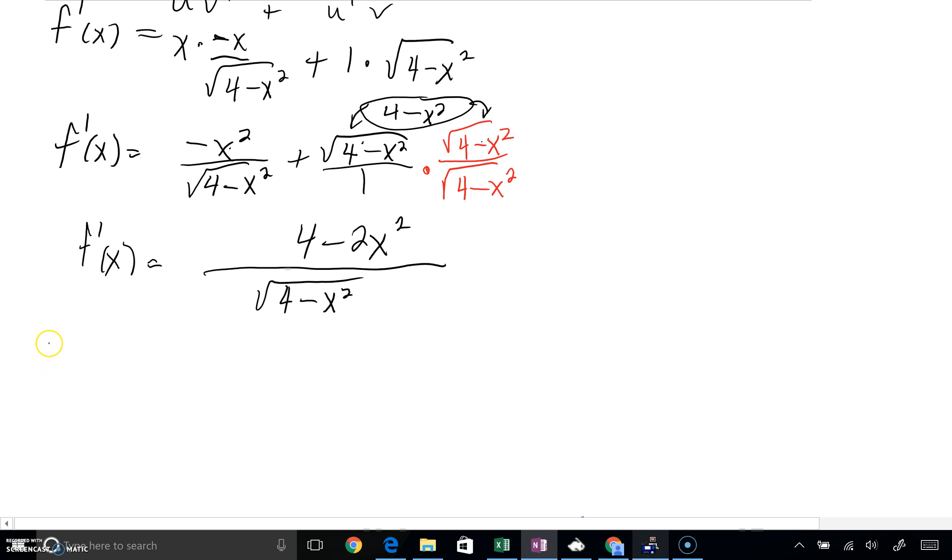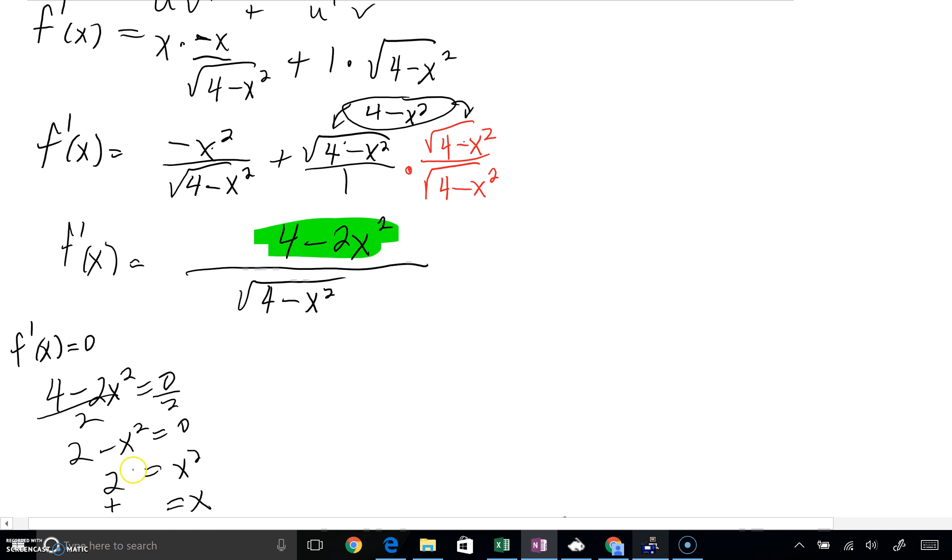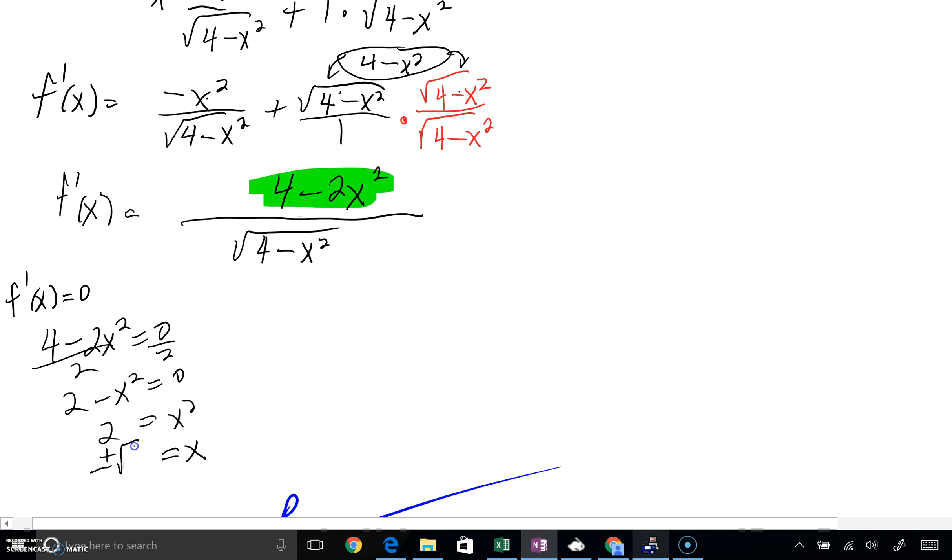Well, we're interested in where our derivative is 0. f prime of x equals 0 where the top equals 0. Where the top equals 0. We can very quickly get some critical numbers in that regard. I'll set the top equal to 0. By the way, if you want to divide by a 2, be my guest. I think that's a very clever thing to do. You can add an x squared. And then take your plus or minus square roots here. And without too much ado here, you've got x is plus or minus radical 2. These are critical numbers.